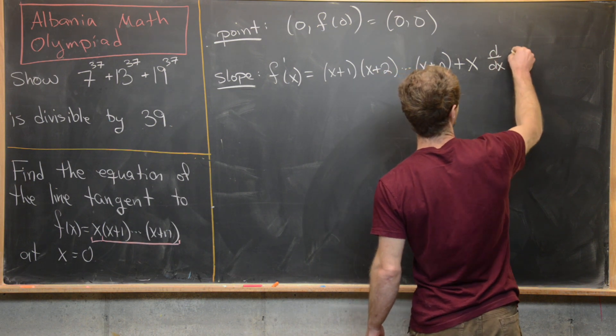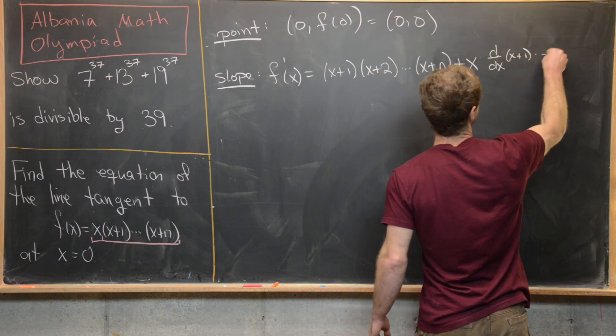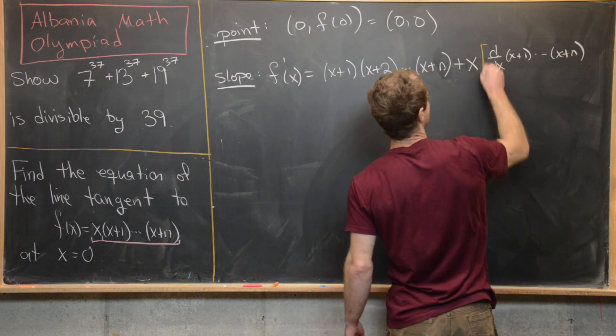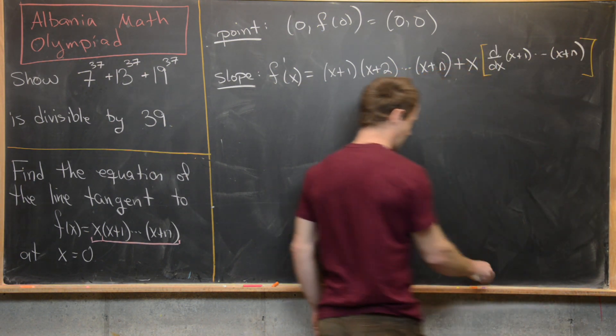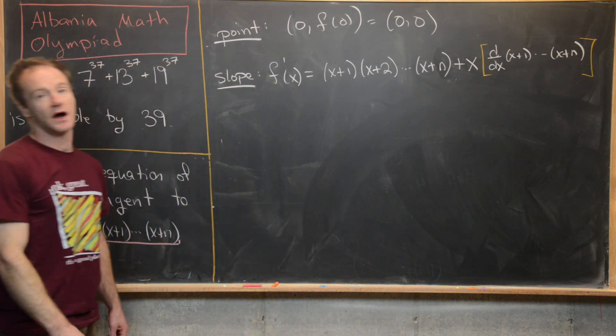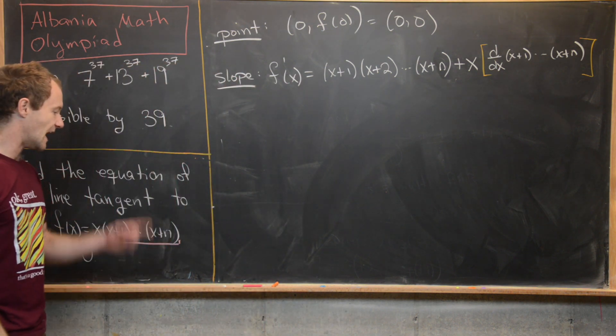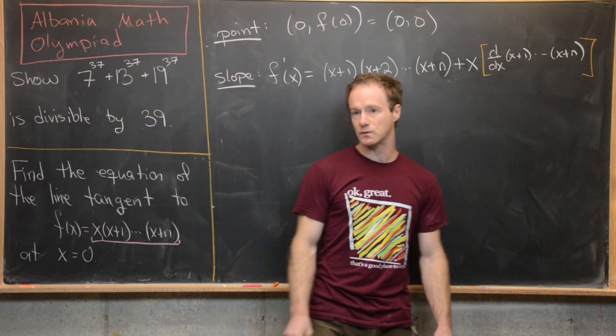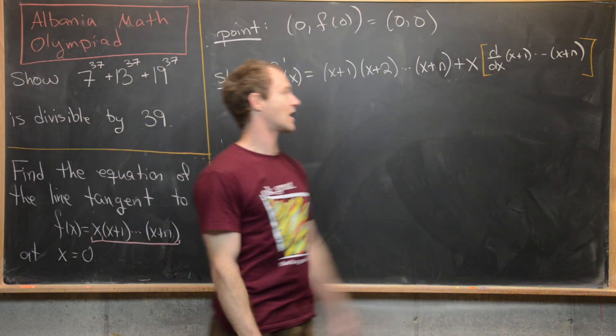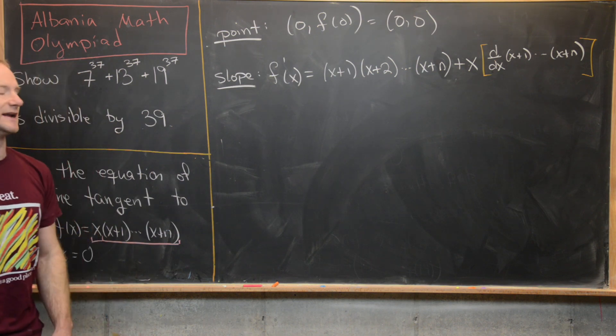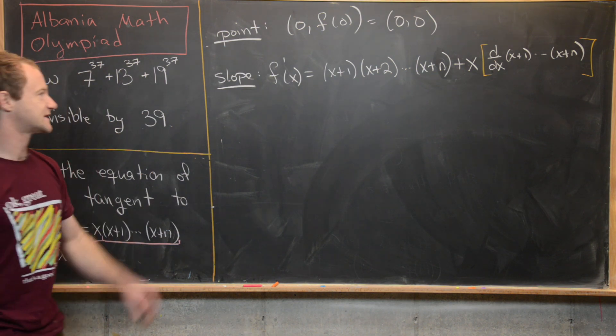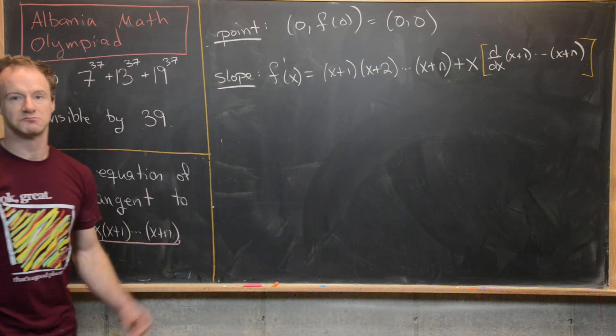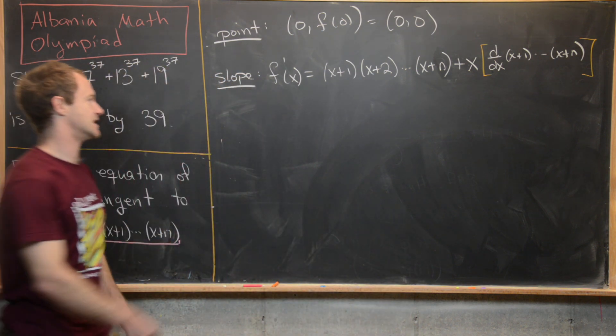And then we're going to have plus x. And now here, I'm just going to write the derivative of (x+1) all the way up to (x+n). So that would be the second portion of this where again, I'm like using the product rule here. And the beautiful thing is since we're worried about the point when x equals zero, we don't actually care what this derivative, which I've bracketed in orange is, because if I set x equal to zero, this thing right here cancels because I've got a multiple of x there.